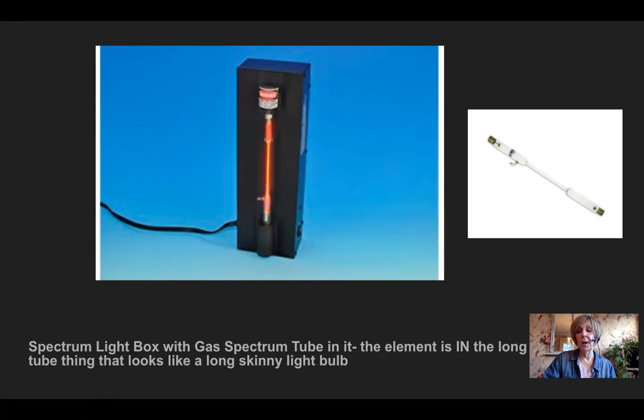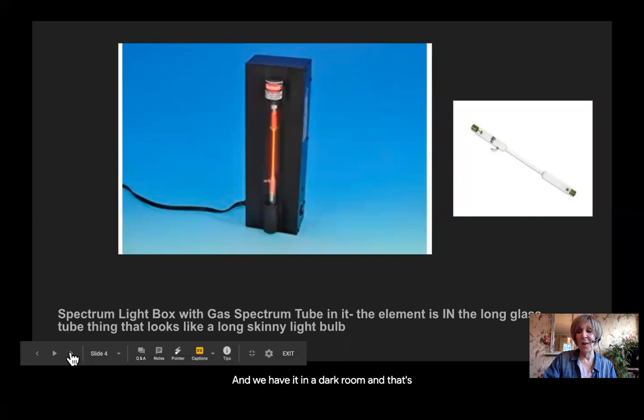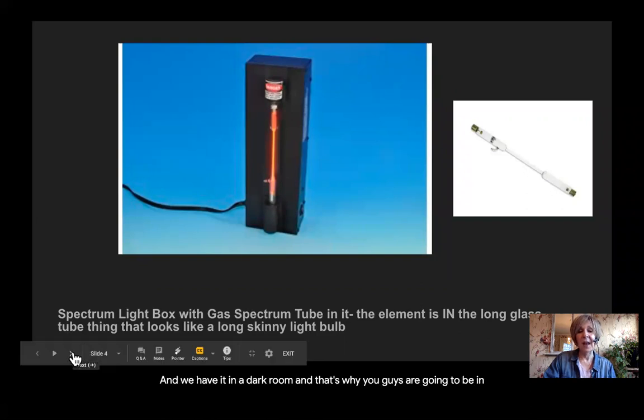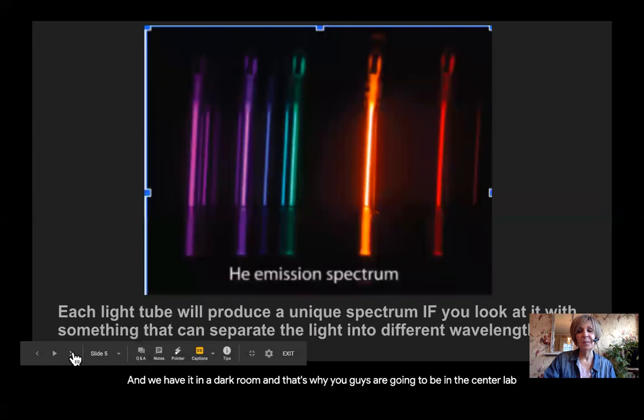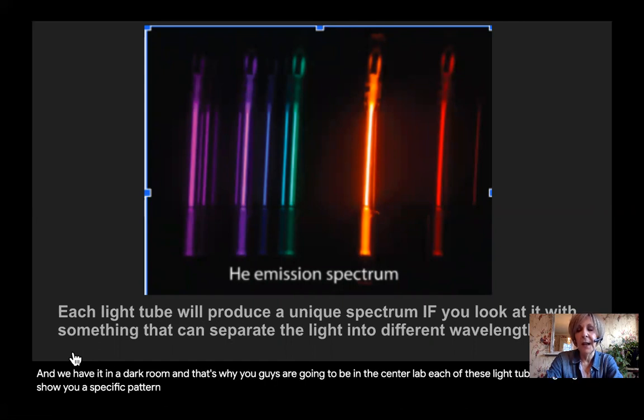So today we're going to see it best when we have it in a dark room. And that's why you guys are going to be in the center lab. So each of these light tubes is going to show you a specific pattern of light if you can separate the light into the different specific wavelengths of color.